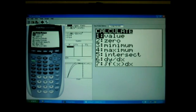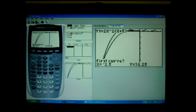So I'm going to go to Calc, intersect again. Curve one and curve two. I'm just going to press enter twice. And then this time...